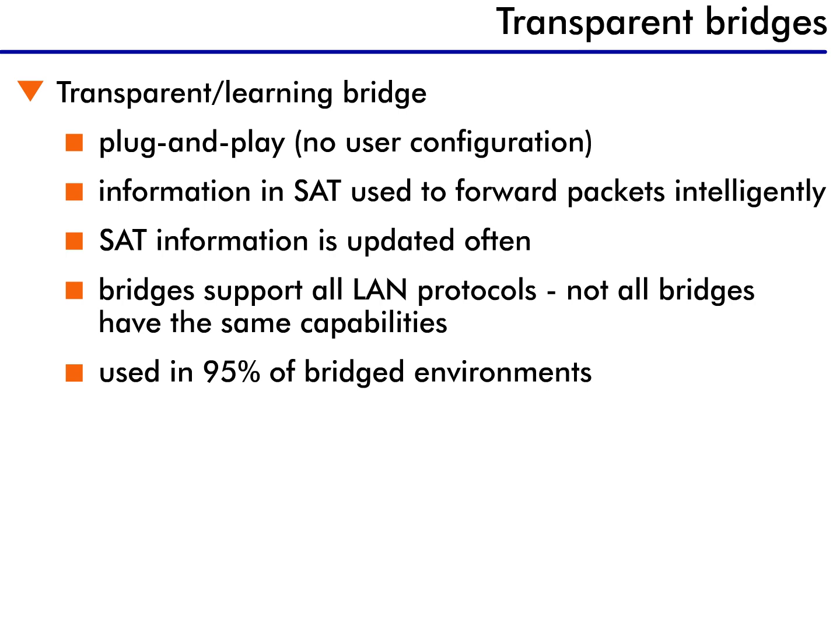After a while, the transparent bridge contains a list of all device addresses and on what port they were received. This information is used for forwarding packets with the matching destination addresses out specific ports, which reduces overall network traffic. The addresses remain in the table for a specified period of time, normally five minutes. If not refreshed within that period, the address and port reference are discarded.